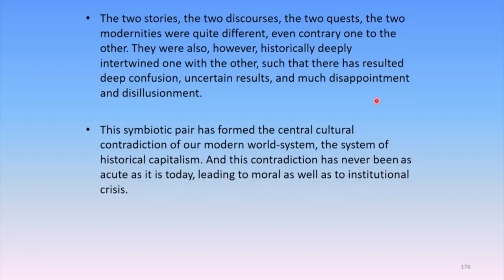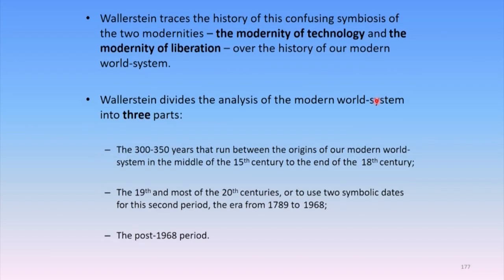There is a moral crisis and an institutional crisis in the ways in which we view the state today. Wallerstein is particularly important in the context of the ways in which he attempts to trace the history of this confusing symbiosis of the two modernities — the modernity of technology (fleeting modernity) and the modernity of liberation (eternal modernity) — over the history of our modern world system.